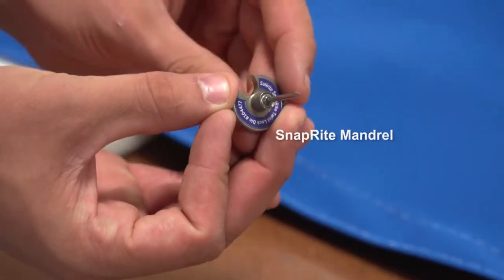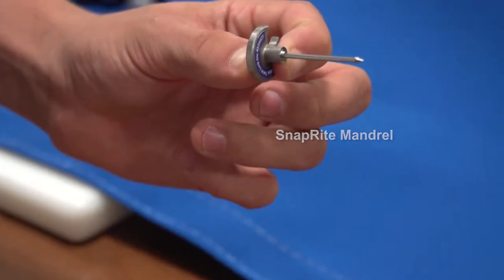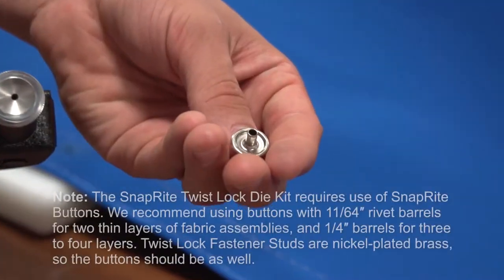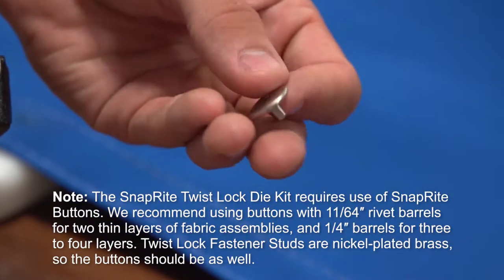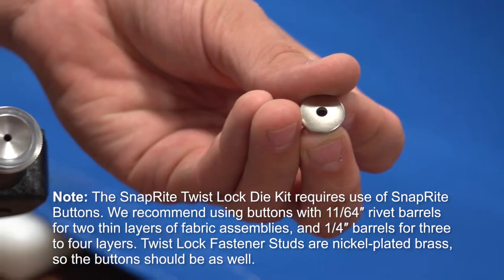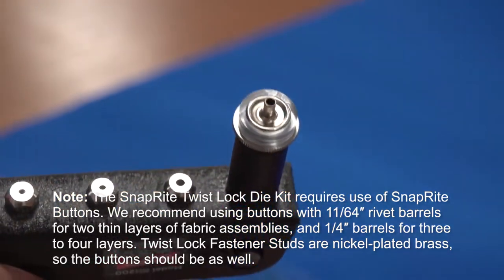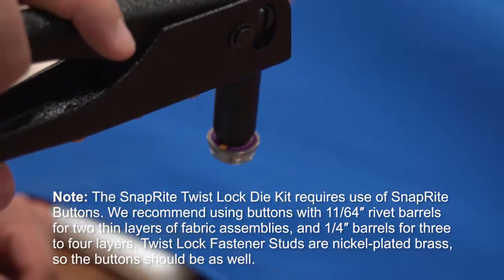Next, we'll install a SnapRite mandrel through the SnapRite Twist-Lock die. Utilizing a SnapRite Snap Fastener button, we'll install this button into the SnapRite button die. Notice the die holds the snap so it does not fall out if you turn the tool upside down.